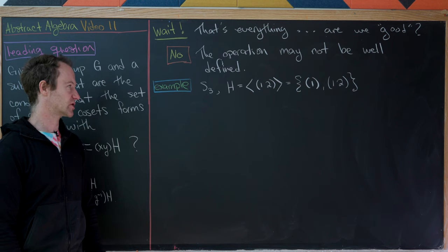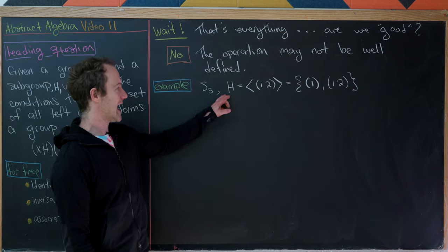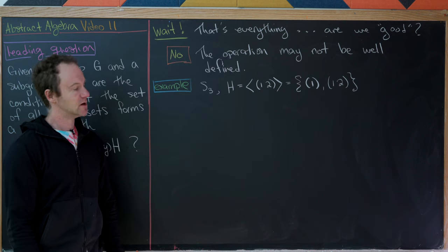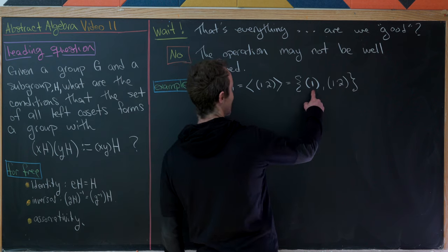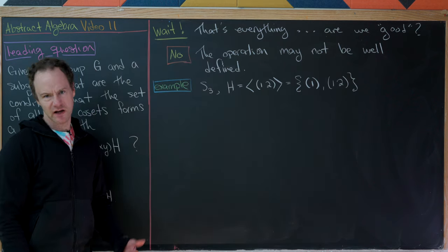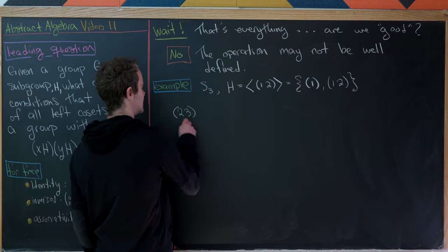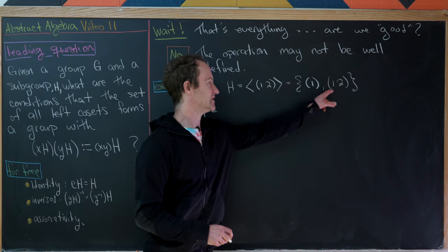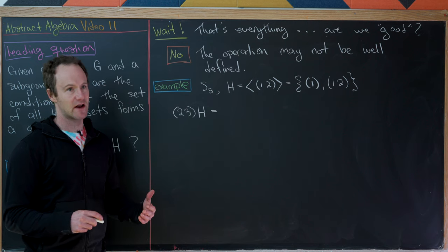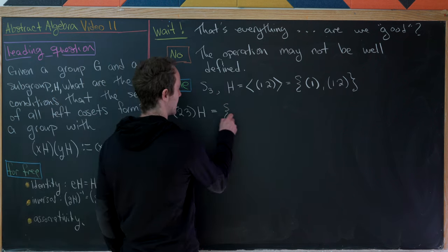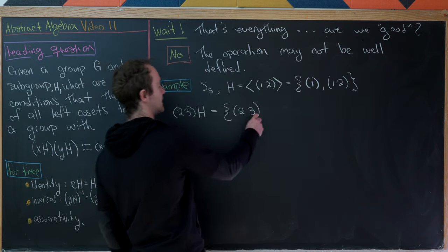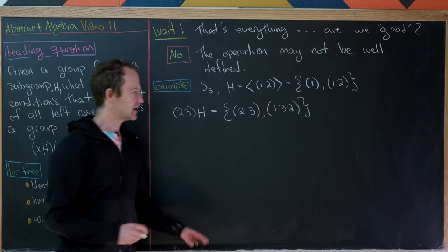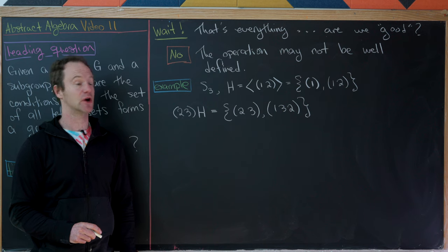Let's start with S3, our symmetric group on three letters, and take H to be the two-cycle (1 2), generating a cyclic subgroup. That has order two, so our cyclic subgroup is just the identity and (1 2). Now let's look at the coset (2 3)H. That's going to be (2 3) times each element of H: we get (2 3) from combining (2 3) with the identity, and then combining (2 3) with (1 2) gives us (1 3 2). But we can take any element of the coset to serve as its representative, so let's also consider (1 3 2)H.